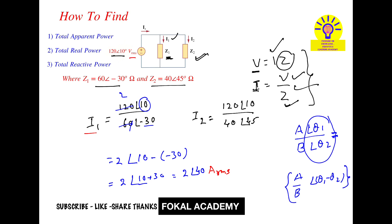Similarly for I2: 120 divided by 40 gives 3, and the angle is 10 minus 45, giving minus 35 degrees. So I2 equals 3 at phase angle minus 35 degrees amperes. Since this is due to an RMS voltage, it is also an RMS current.